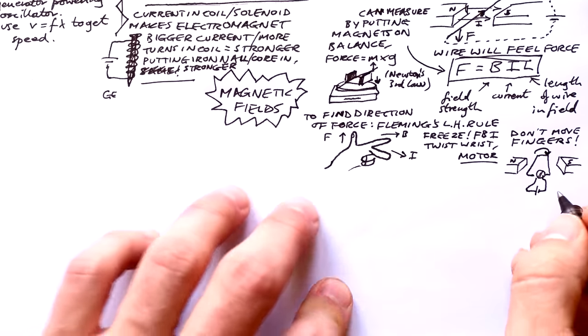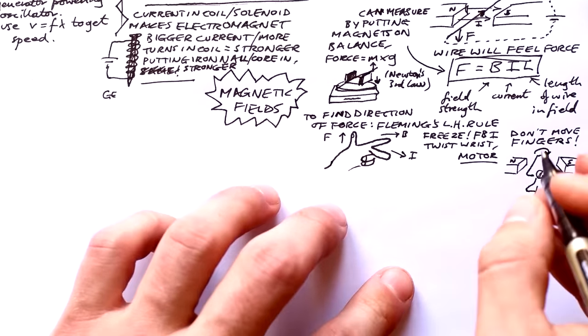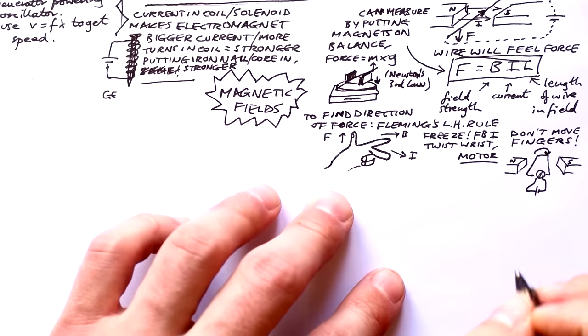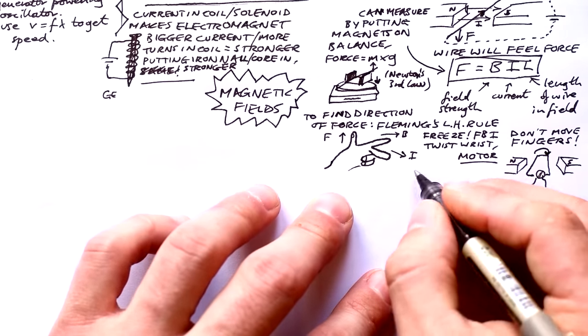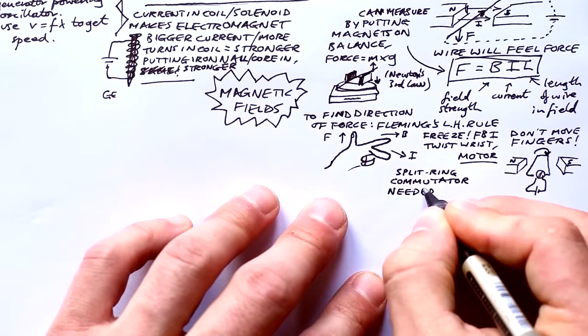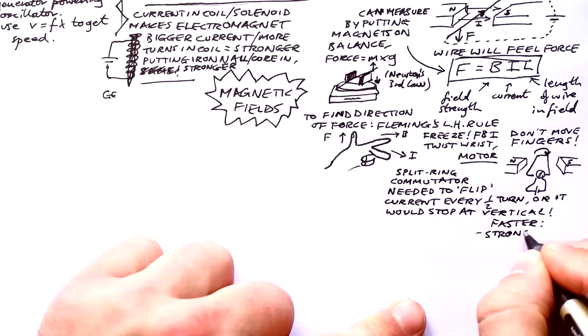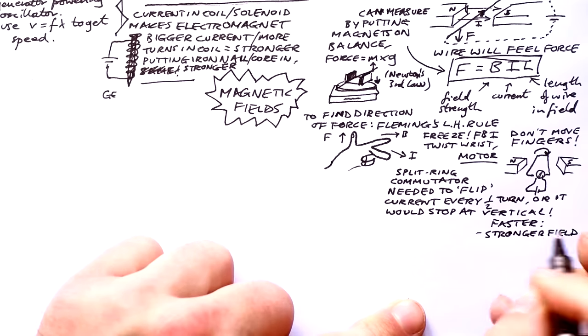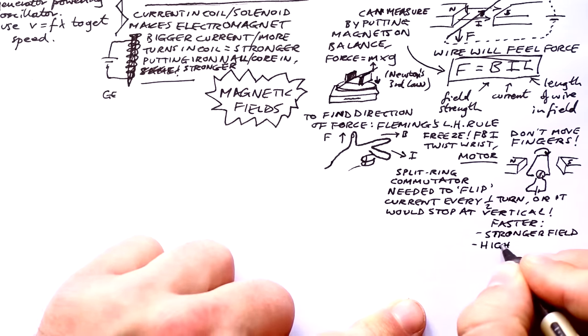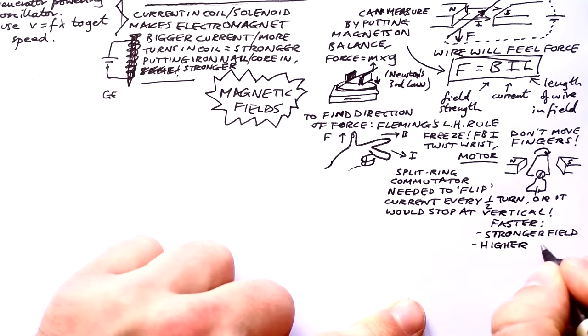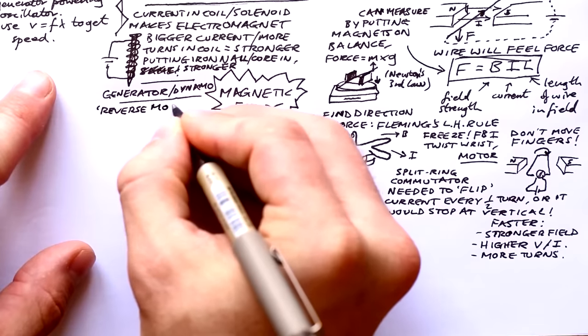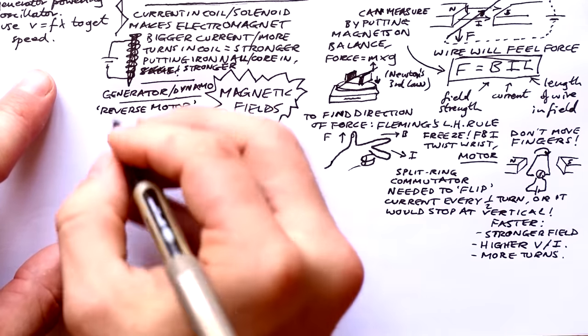Unsurprisingly, a simple motor can look like this. We have a coil of wire with a current flowing through it, and we have a north and a south pole of two magnets either side. The coil must be connected to the circuit via a split ring commutator. This is to make sure that the current flips every half a turn. If this wasn't there, then the coil would just go vertical and then stop. But flipping it makes sure that it keeps going. To make a motor go faster, we can have a stronger magnetic field, a higher PD or current, and more turns in the coil. In reality, motors have hundreds of turns.